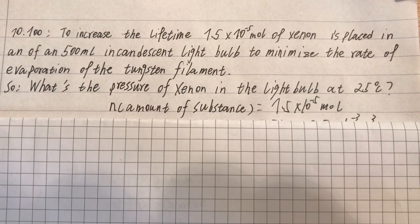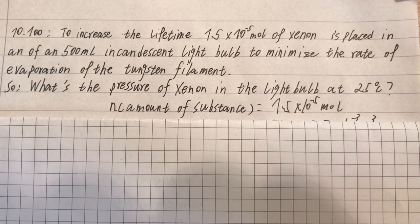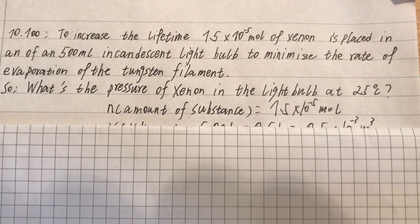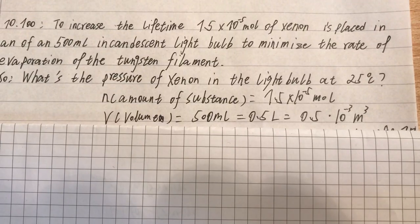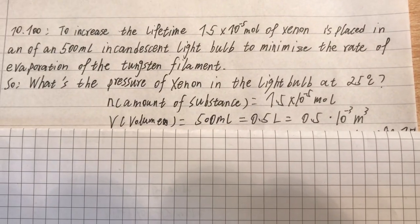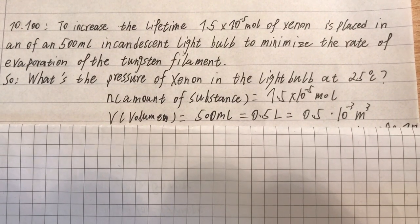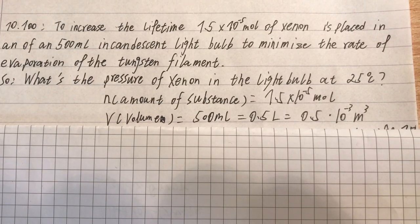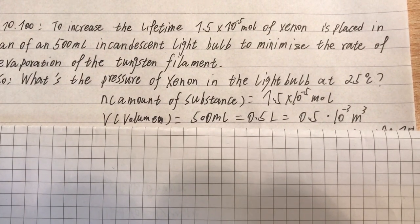As the question given, we have the amount of substance here, which is equal to 1.5 multiplied by 10 to the power of minus 5 mole. Then we have the volume, which is 500 milliliter. But in this question, it has to be converted to cubic meter. So, it's equal to 0.5 multiplied by 10 to the power of minus 3 cubic meter.